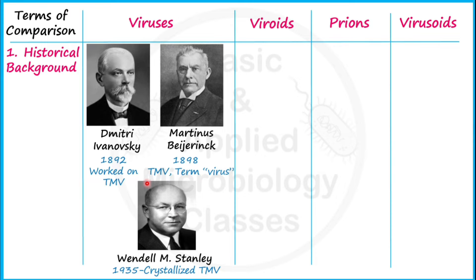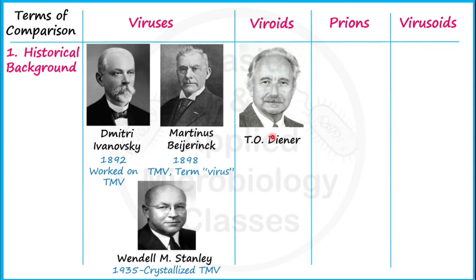Wendell M. Stanley, an American biochemist, in 1935 first crystallized tobacco mosaic virus — making it the first virus ever discovered. Moving to viroids, T.O. Diener, who worked at the University of California, discovered viroids for the first time in 1971, discovering the potato spindle tuber disease viroid.